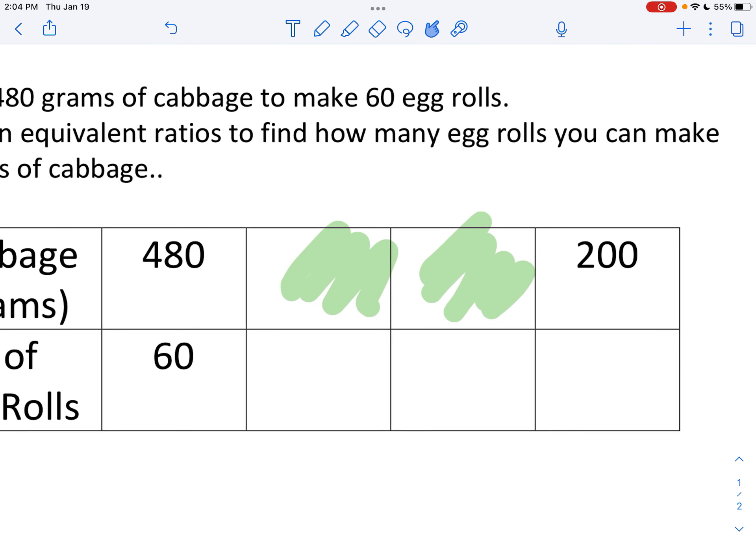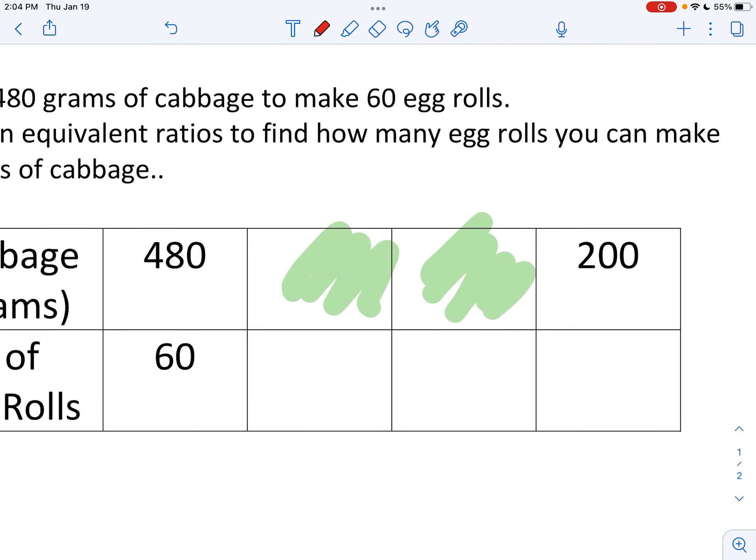Something that I notice right off the bat is that both of these end in 0. So what that means is 10 is a common factor. If I know that 10 is a common factor, then I don't want to divide by 10. I want 10 to be the number in the box.